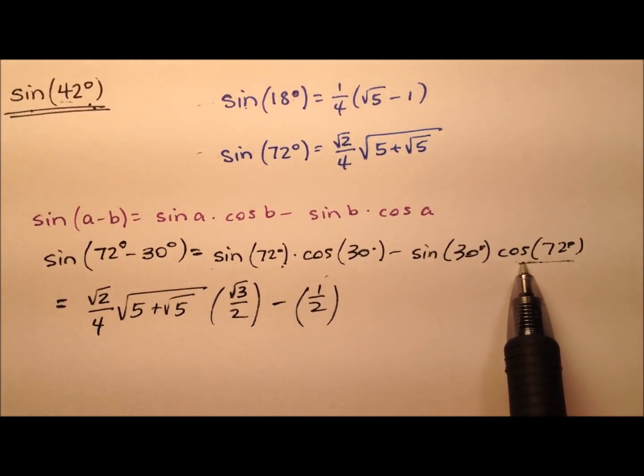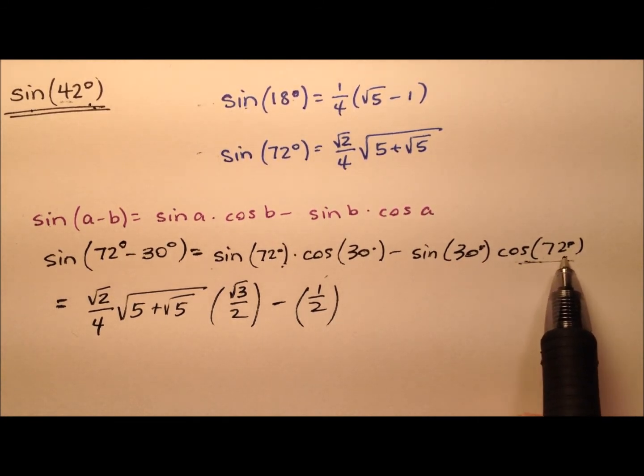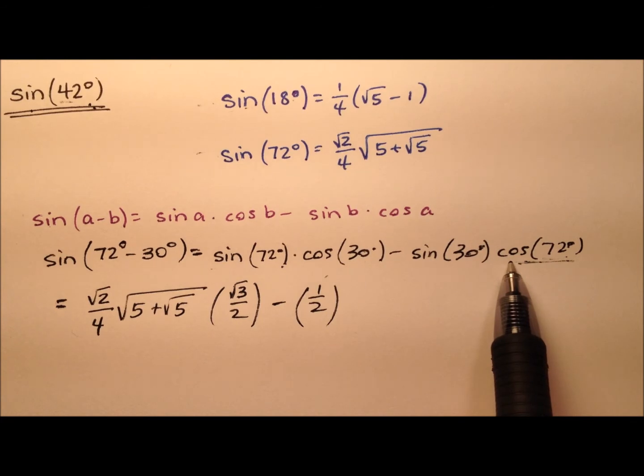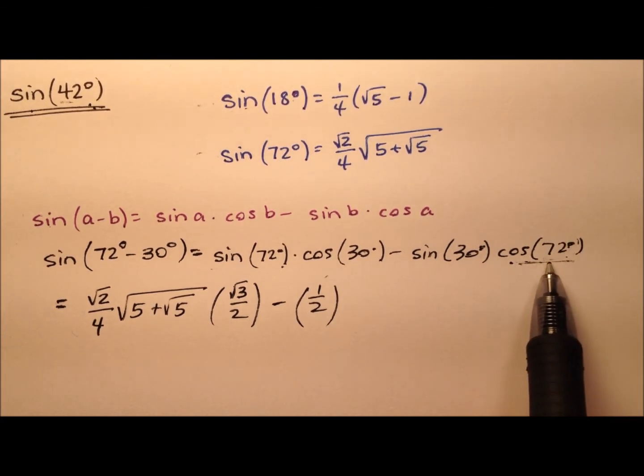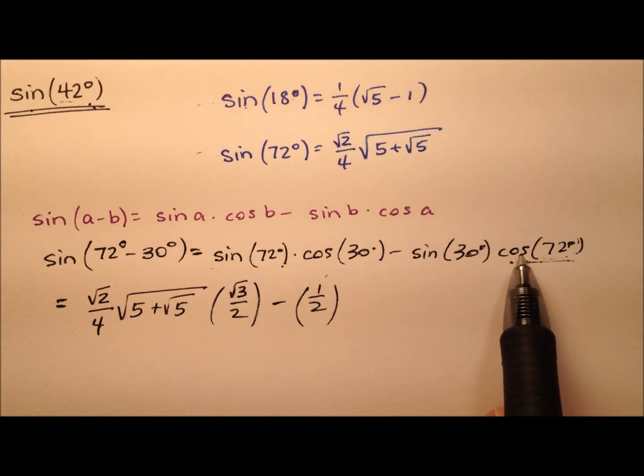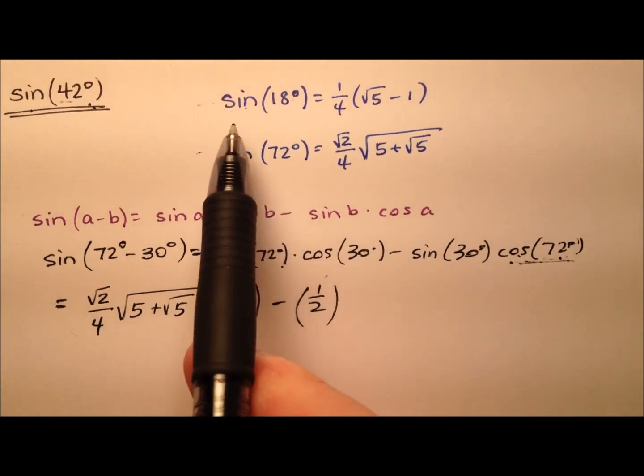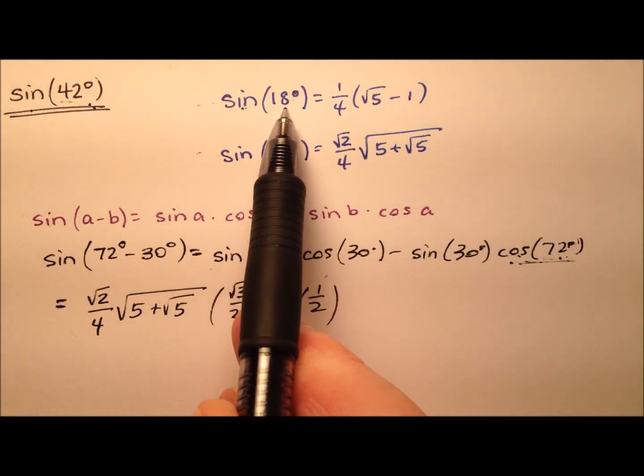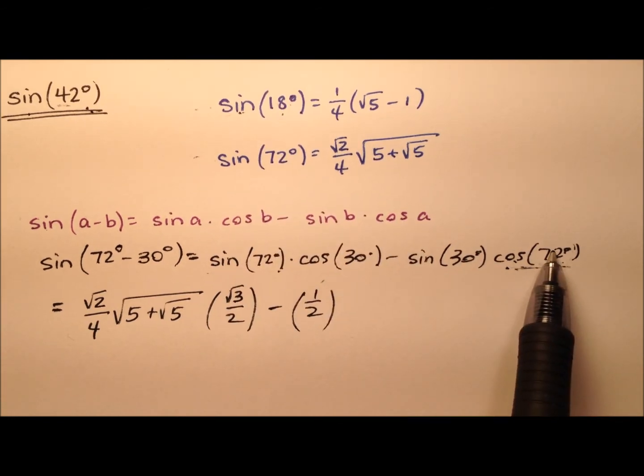Well, sine and cosine have this really nice relationship where the cosine of one angle and the sine of the complement of this angle are going to be equal to one another. So instead of using this cosine of 72 degrees, I can use the sine of 18 degrees, because 18 and 72 are complementary, they add up to 90 degrees.